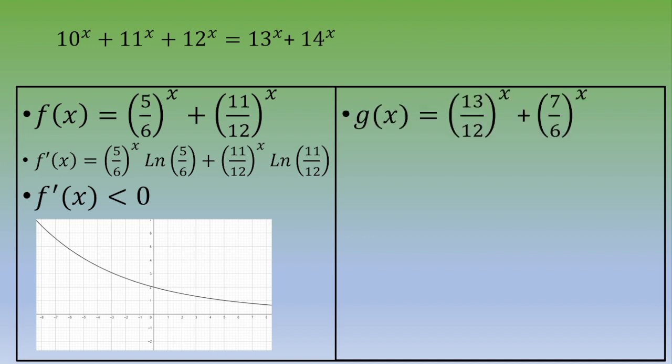Now let's take care of the other function. At the end, you got g'(x) = (13/12)^x ln(13/12) + (7/6)^x ln(7/6). Exactly the same—you've got two powers.